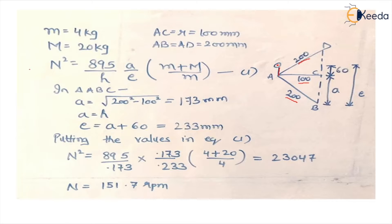Now we know the formula for speed of Proell governor which is N squared equals 895 upon H, that is the height of governor, into A upon E. A is this distance and E is this distance. This is the vertical distance from this axis of the extension links to this axis.